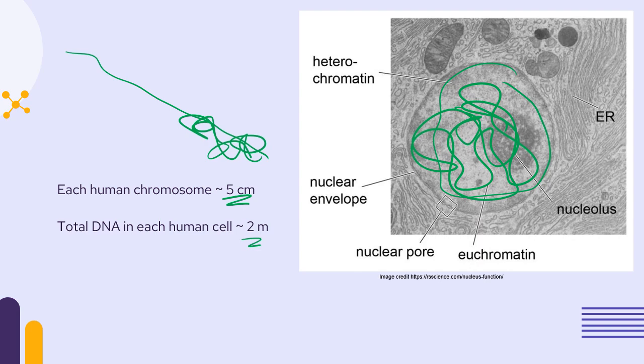Here's where things get crazy. If you took all the DNA in all the cells of your body and put them into one long line, it would actually cross the diameter of our solar system twice. That's how much DNA is in your body. Crazy.